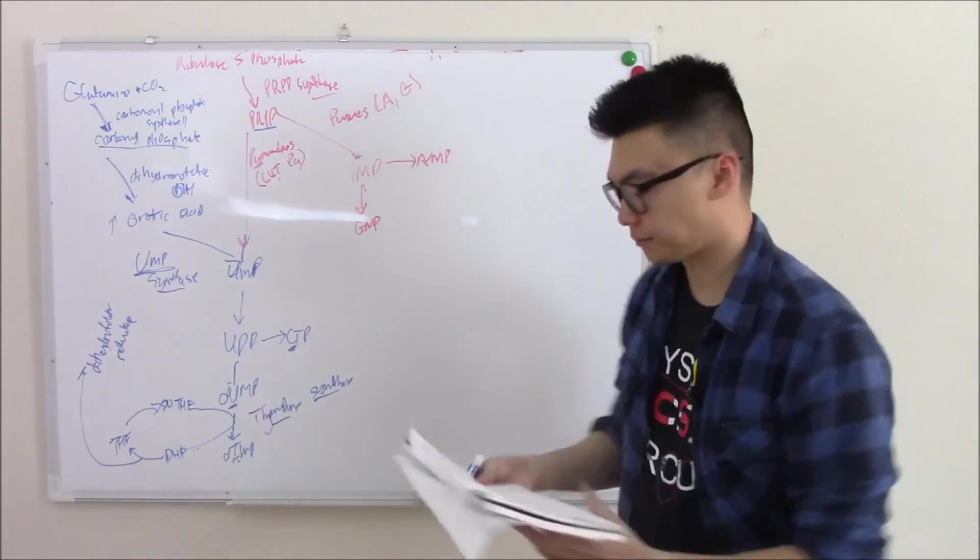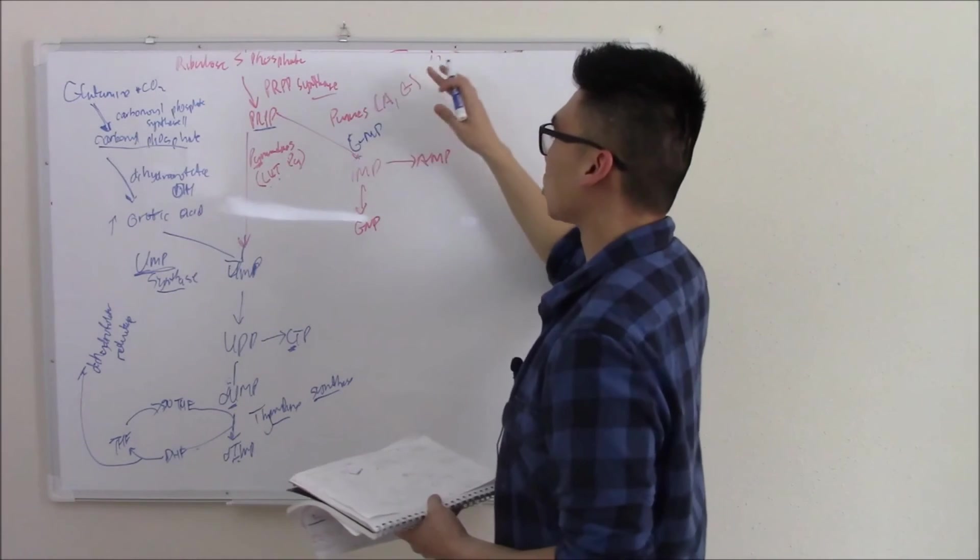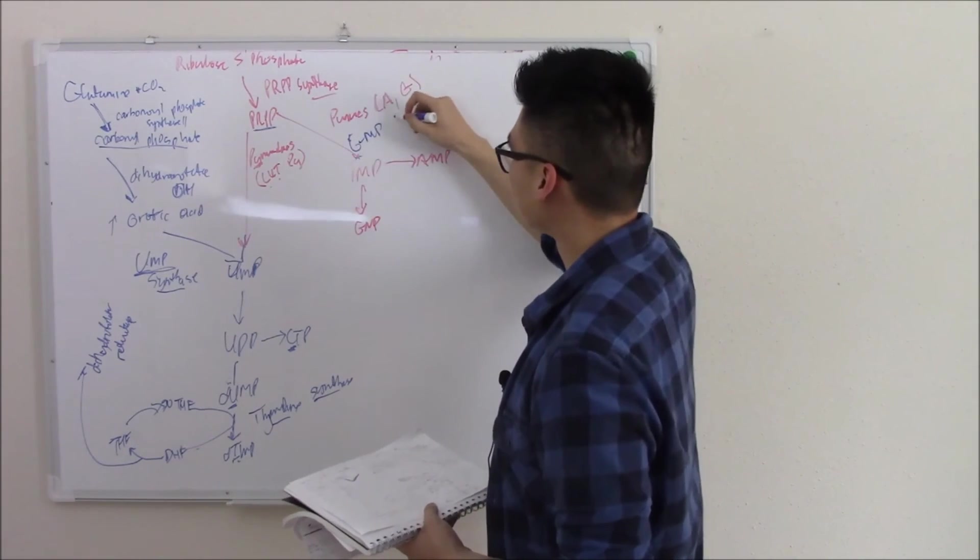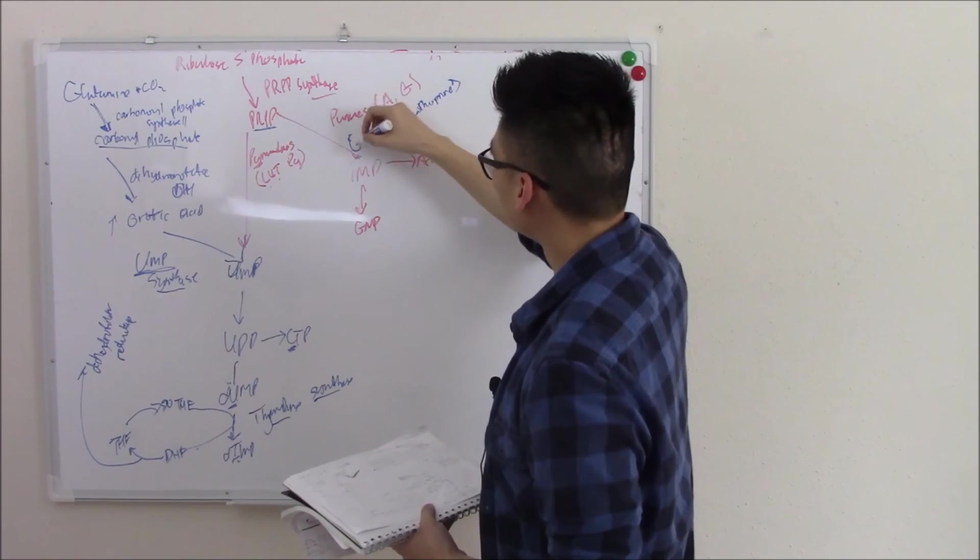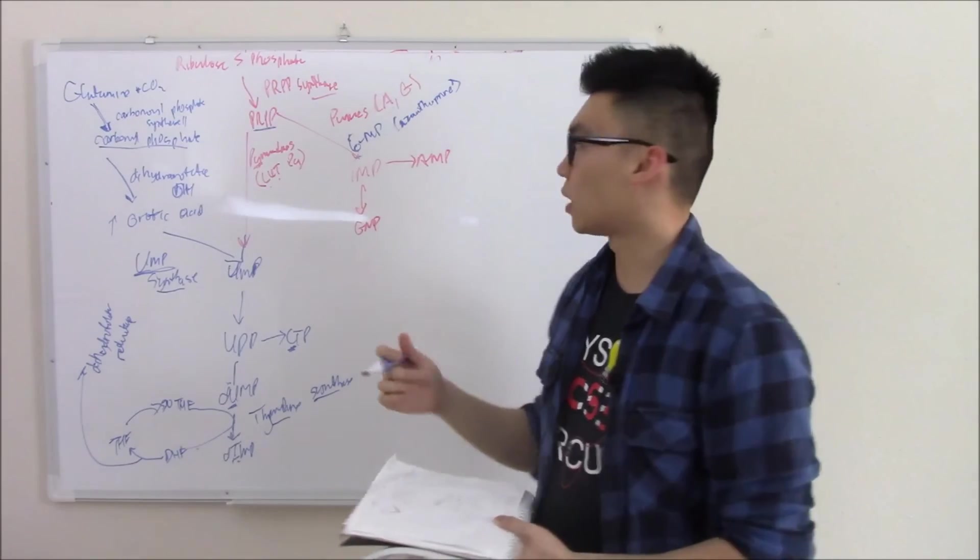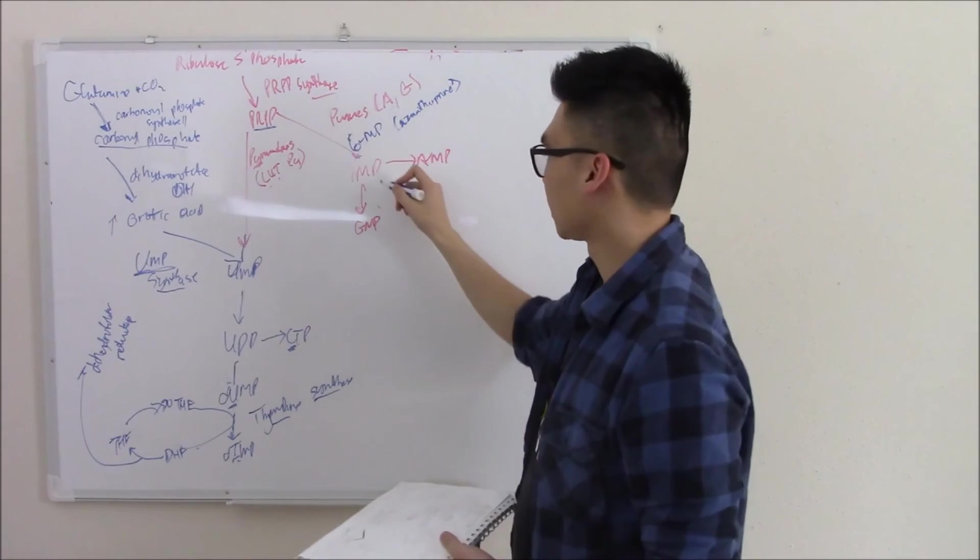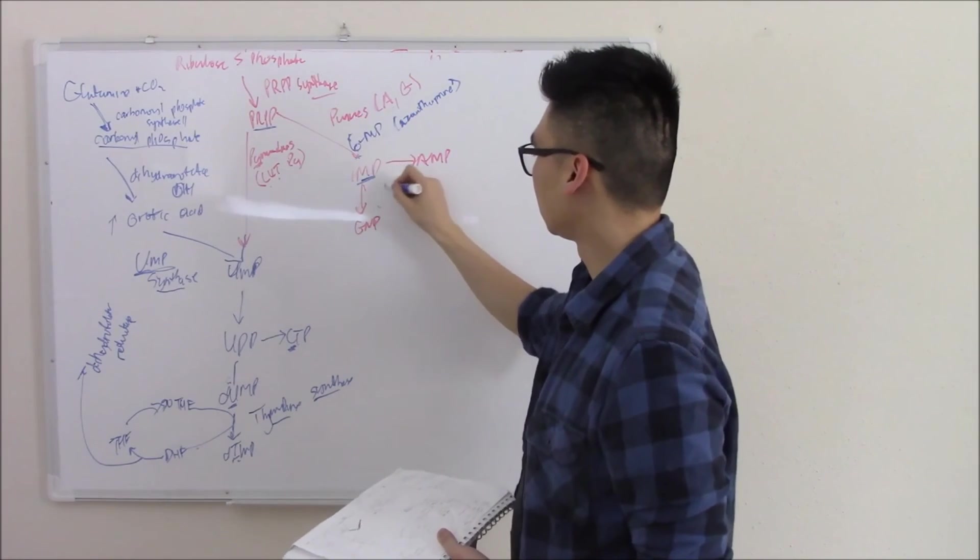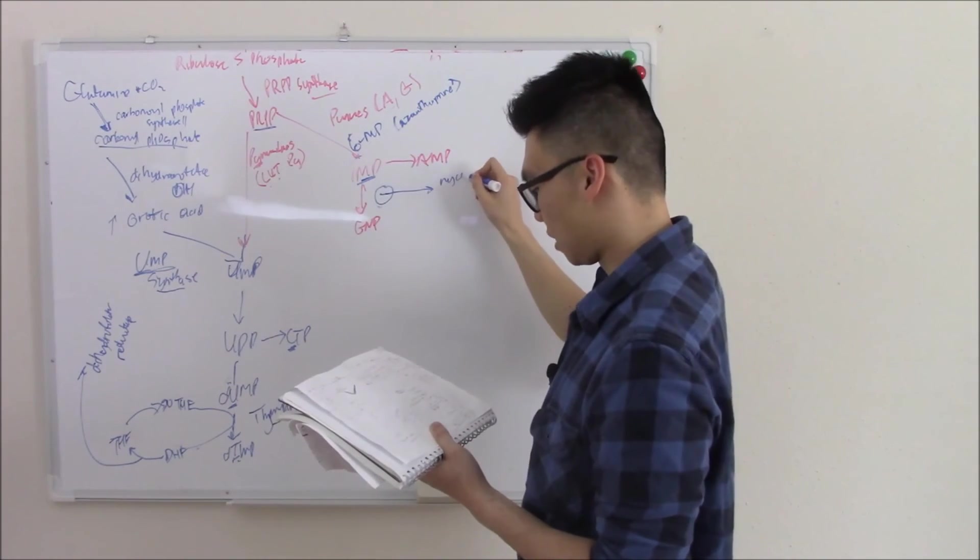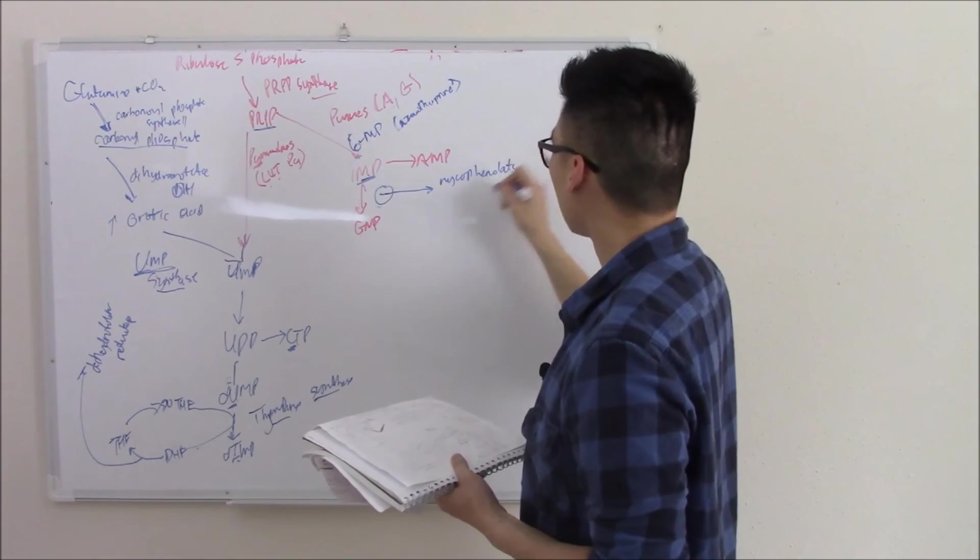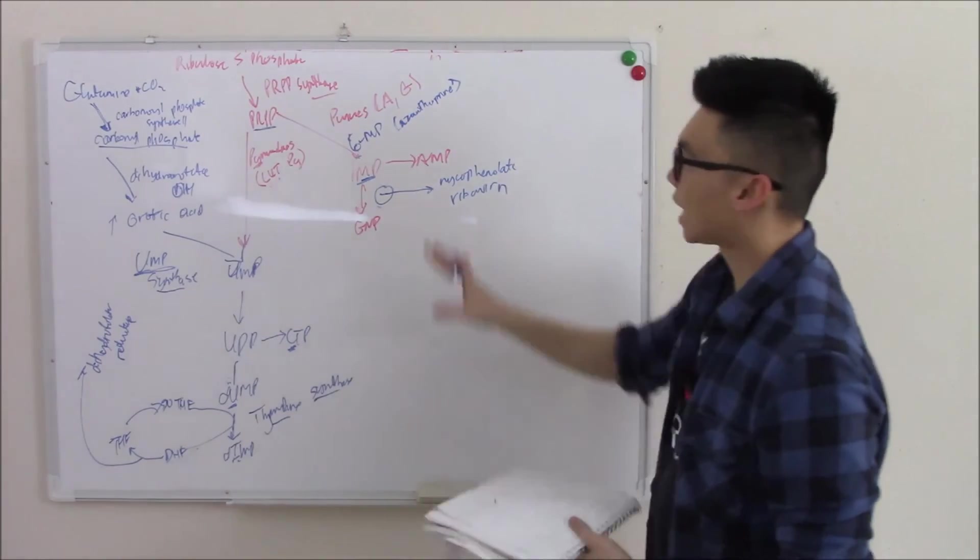We'll start with purines. That is your 6-MP or its prodrug azathioprine. It also works on the purines salvage pathway. Either way, you decrease purines that way. You can also stop the conversion of IMP to anything else, like GMP via immunosuppressants such as mycophenolate or the antiviral ribavirin. That's your purines.